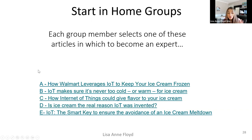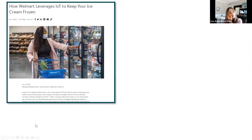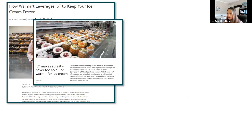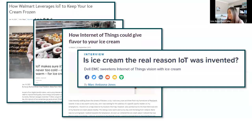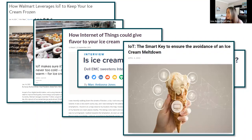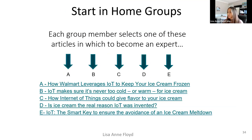The five articles cover topics like: how Walmart uses IoT to keep ice cream frozen, IoT making sure ice cream never gets too warm or too cold, how IoT could give flavor to ice cream, why ice cream is the real reason IoT was invented, and the smart IoT key to avoiding an ice cream meltdown. Students select an article and join that expert group.